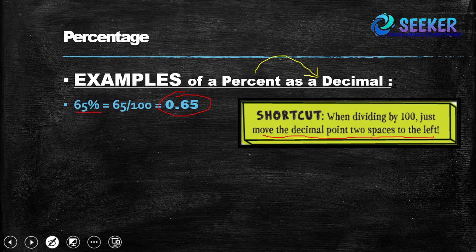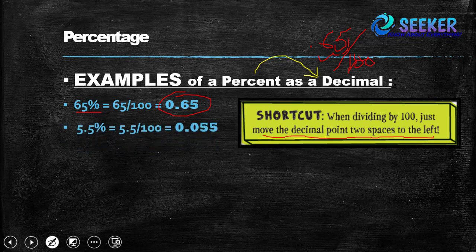If we see that 65 divided by 100 — we have a decimal point, and moving it 2 spaces to the left gives us 0.65: one space and two spaces. Similarly, 5.5 percent is equal to 5.5 divided by 100, which comes out to be 0.055.